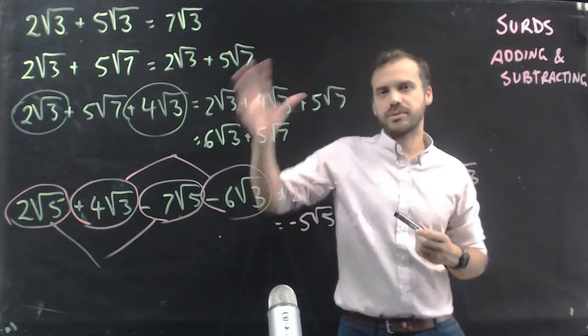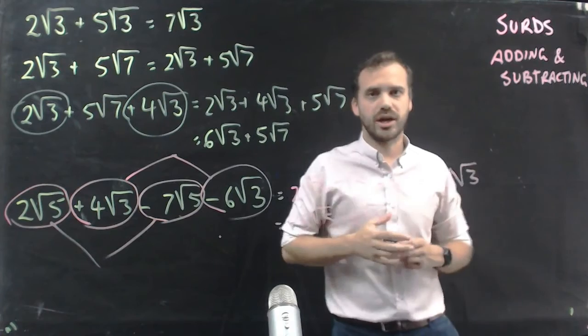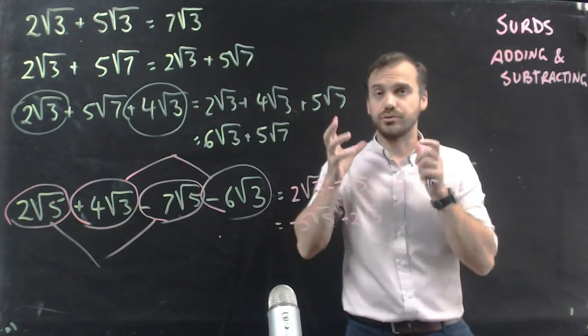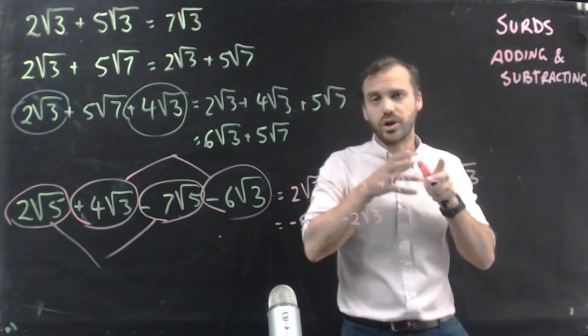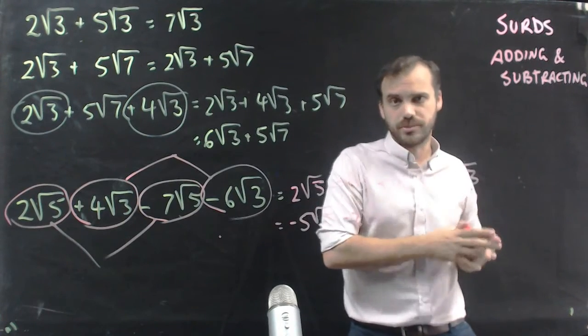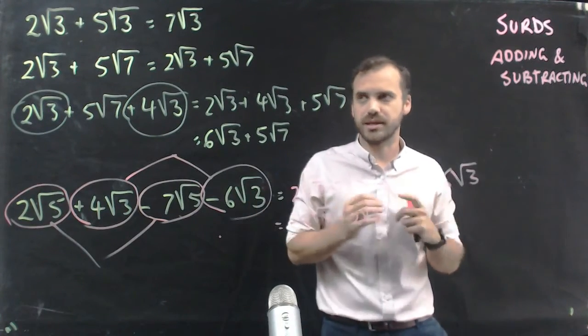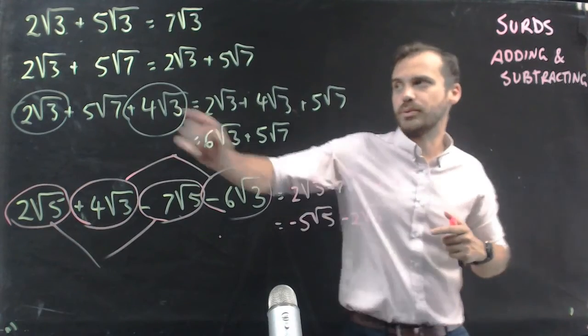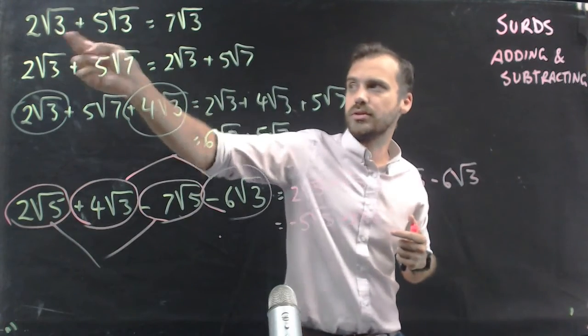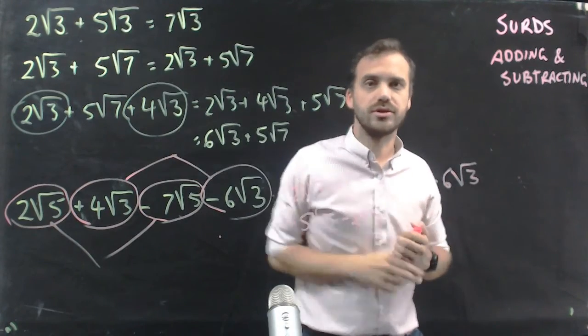So all of this can be done with addition and subtraction — you are grouping like terms, the same way you've done with algebra in the past, only now we're doing it with surds.